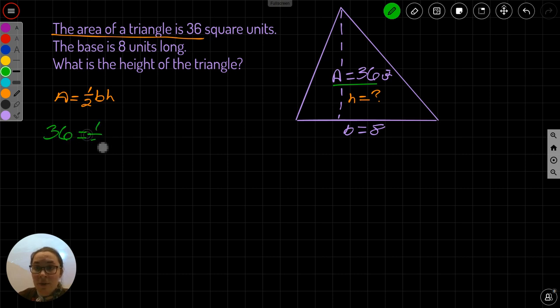Well, 1 half is still there, 1 half times, what else do we know? We know base. We know that the base is 8 units long. B equals 8. So this is going to be times 8 times the only thing we don't know is H. So H is going to be the one missing link. It's going to be what we're trying to find.